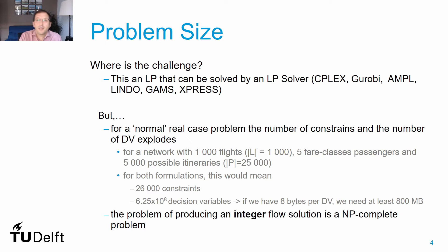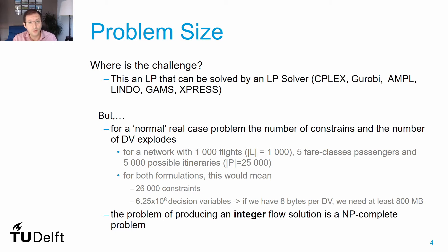Let's first discuss the challenge of computing a solution for the passenger mix flow problem. With both formulations — the standard one and key path one — the computational time needed to obtain a solution to a real-size problem can be very high. We can solve our linear programming model using a commercial LP solver, but when we address problems with several hundreds of flights, with a few fare classes and many possible itineraries, the model explodes in size.